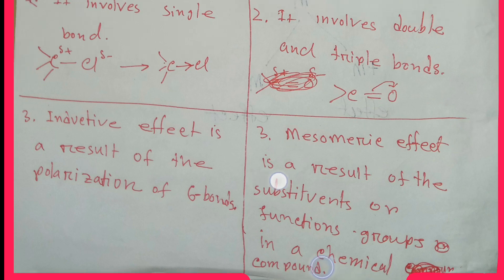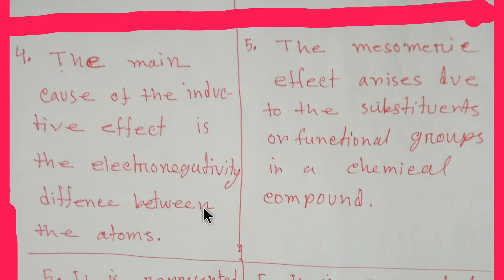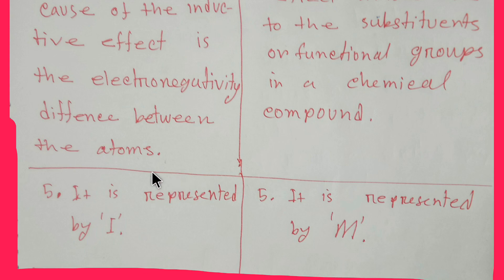The main cause of the inductive effect is the electronegativity difference between the atoms. On the other hand, the mesmeric effect arises due to the substituents or functional groups in a chemical compound. The inductive effect is represented by I, and the mesmeric effect is represented by M.